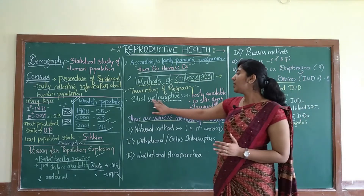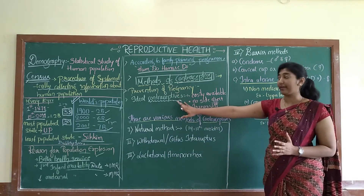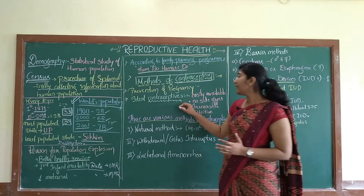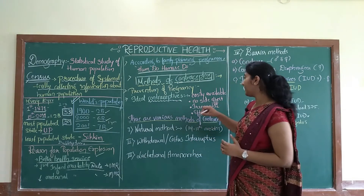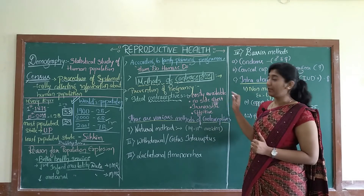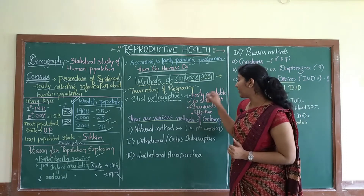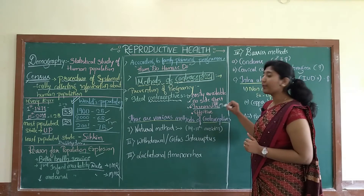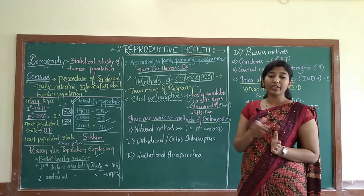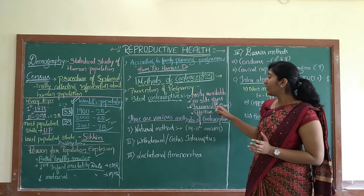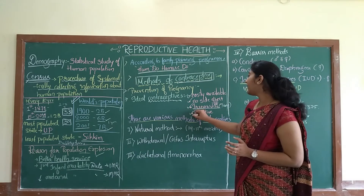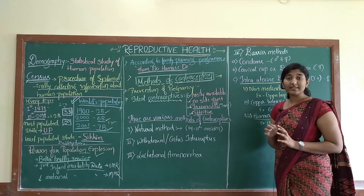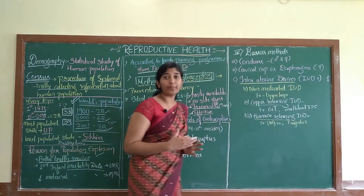There are many contraceptives available in the market, but we will study what makes an ideal contraceptive. The characteristic features of an ideal contraceptive are: it should be easily available, it should have no side effects, its effect should be reversible — meaning temporary, to stop pregnancy during the gap between two children — and it should be very effective. These are the four characteristics of ideal contraceptives.